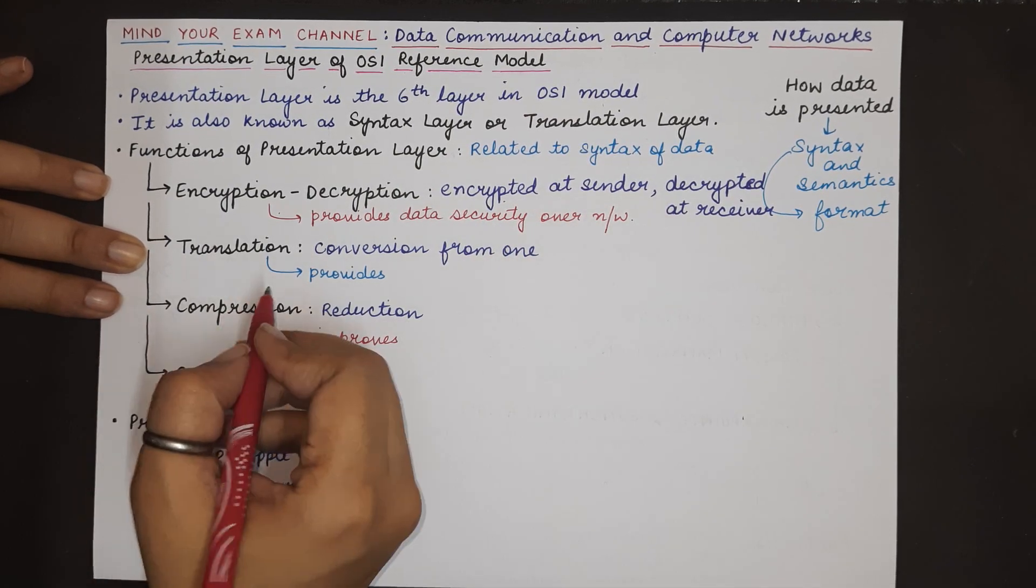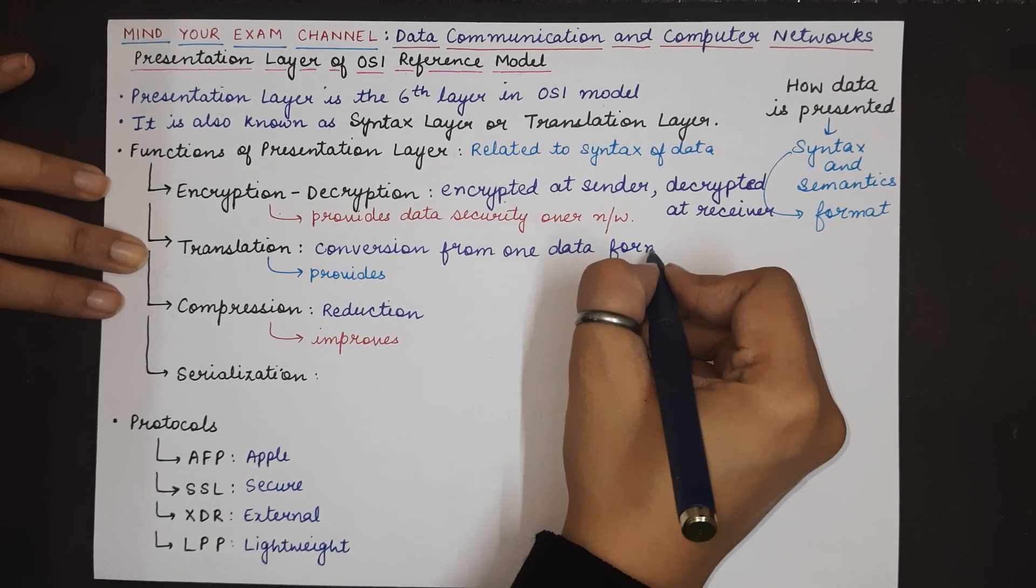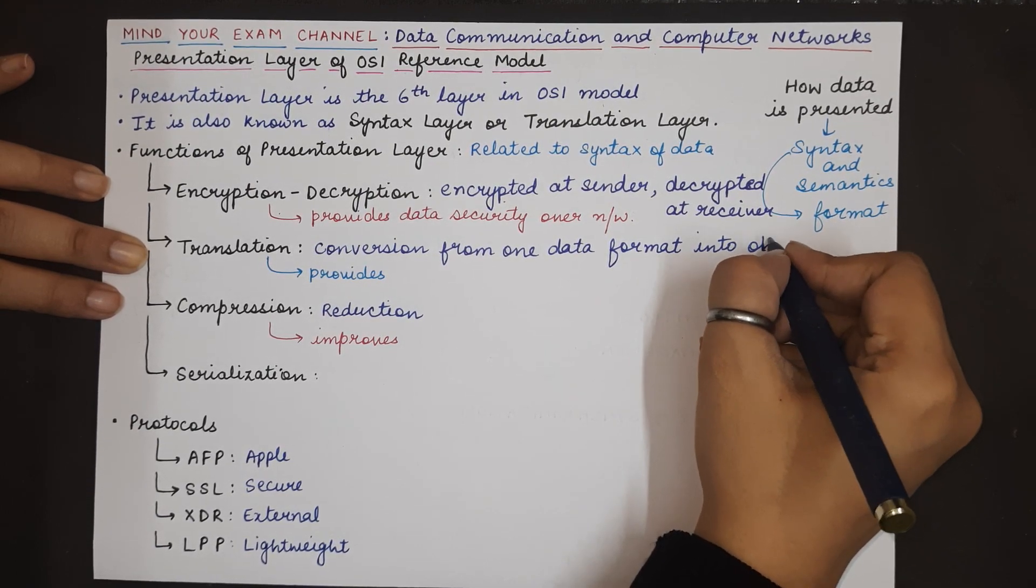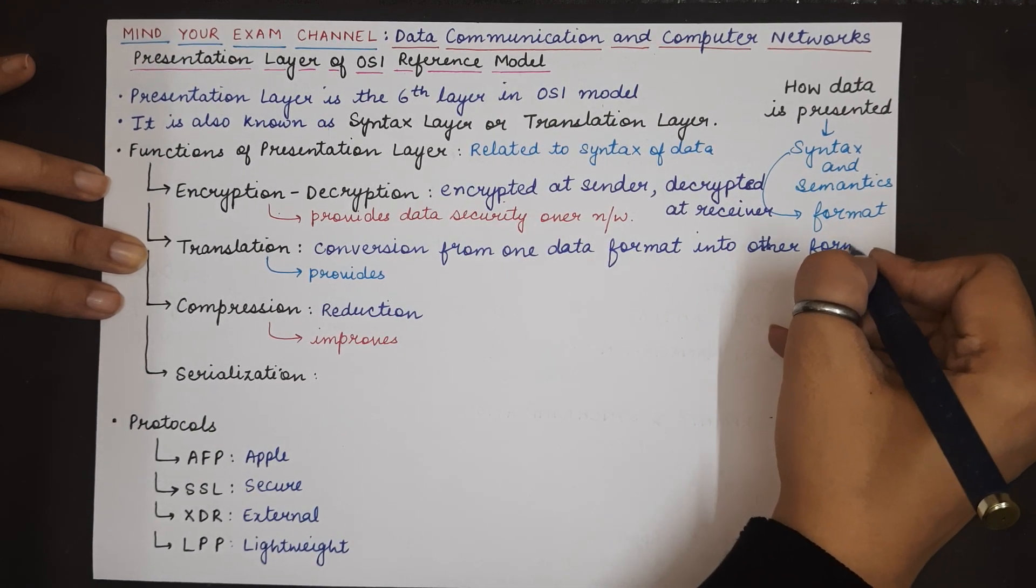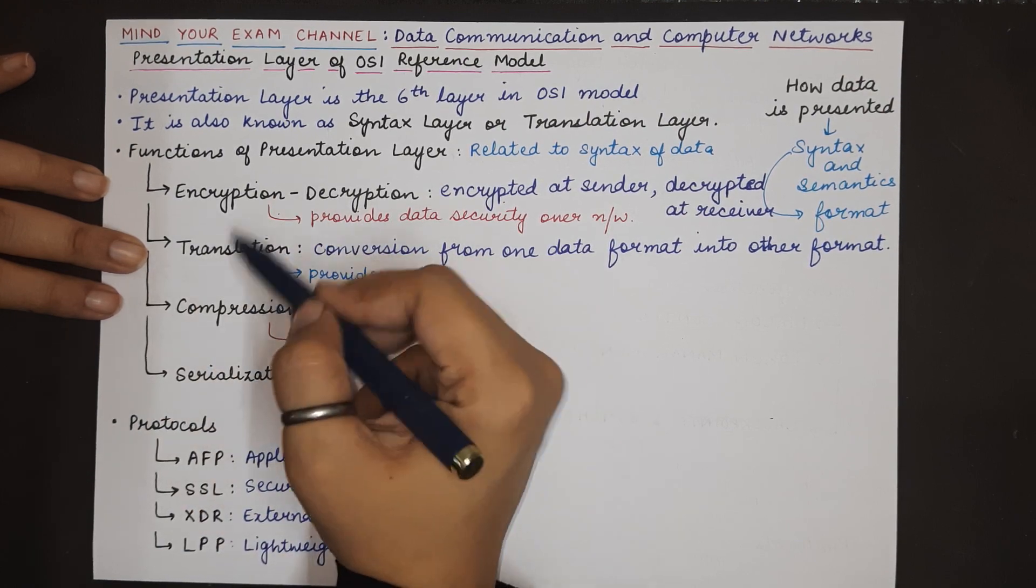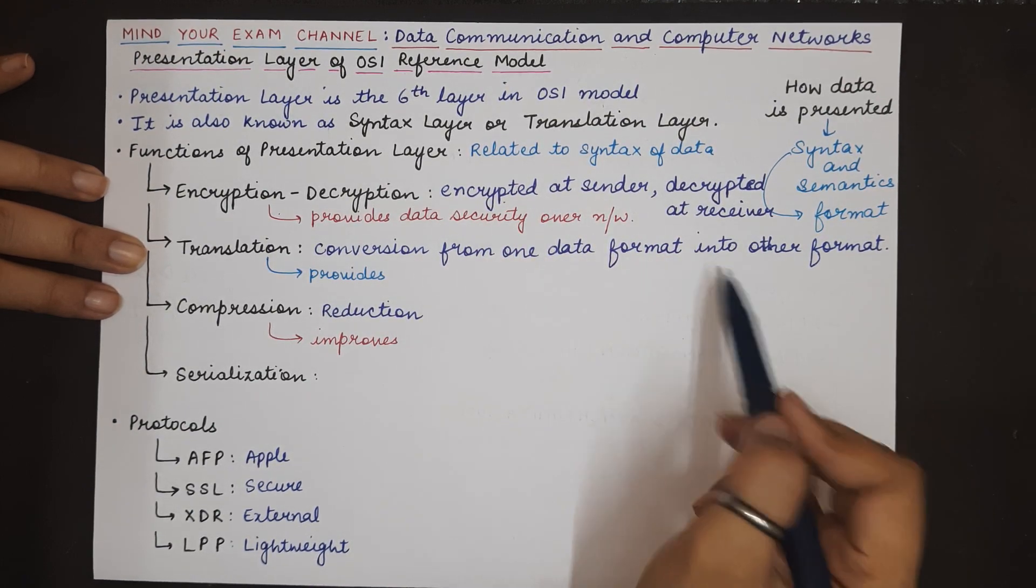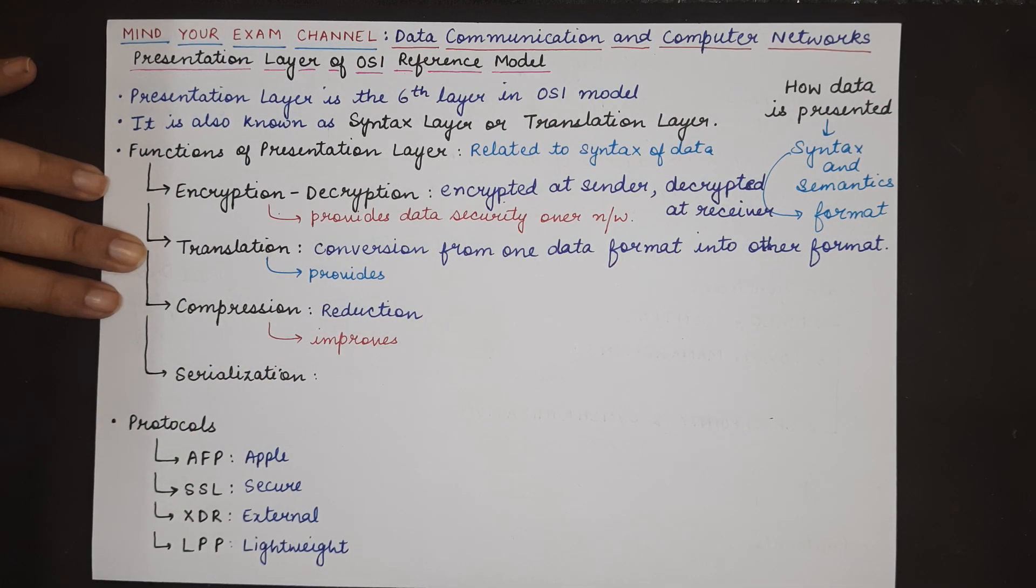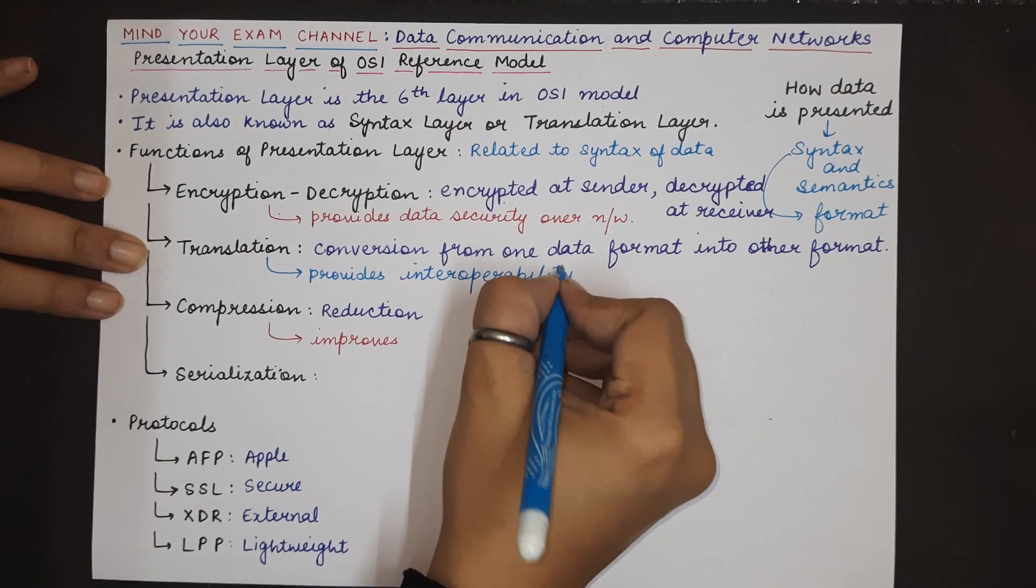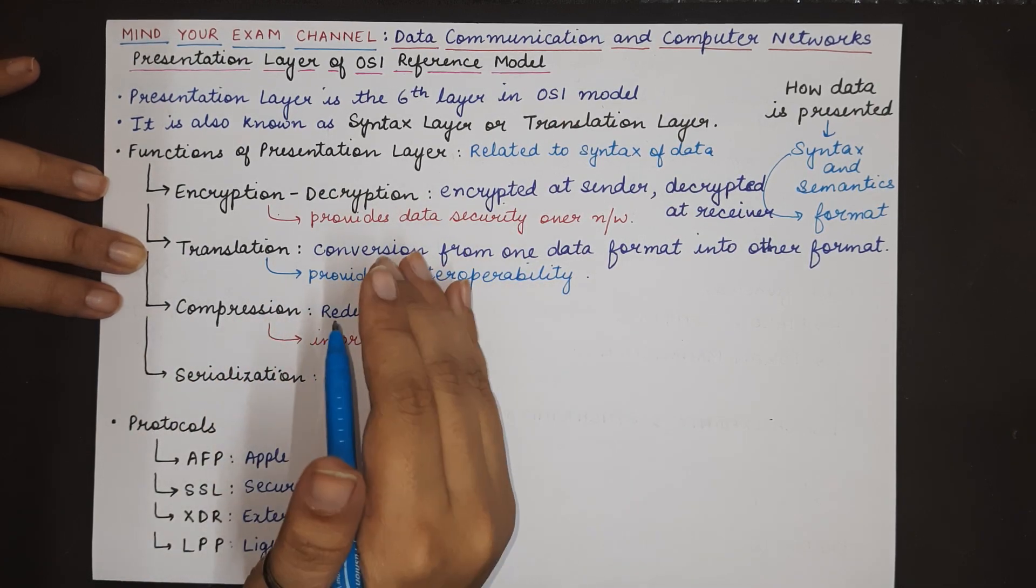The next function of the presentation layer is translation. Translation means conversion from one data format into the other. There might be instances where the sender has created data in one format and the receiver expects to receive or the receiver will be able to understand the data only in some other format. Then, it is the responsibility of the presentation layer to perform this conversion from one data format into the other data format which is understandable by the receiver. This functionality provides interoperability among the interacting devices.